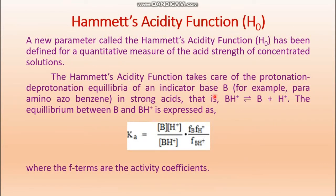Now we move on to Hammett's acidity function, denoted as H₀. A new parameter called Hammett's acidity function H₀ has been defined for a quantitative measure of the acid strength of concentrated solutions — solutions with molarity greater than one. If concentration is one, pH is zero, and for higher concentrations pH would be negative. At high concentration or low dilution, we cannot use the concentration term; we must use the activity term.